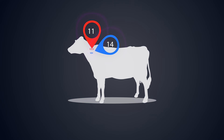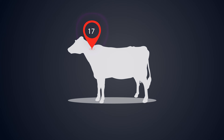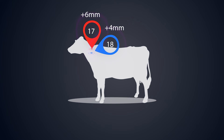Animal number 56 had first-day skin fold measurements of 11 mm at the avian injection site and 14 mm at the bovine injection site. 72 hours later, the skin fold measurement at the avian injection site is 17 mm — an increase of 6 — and 18 mm at the bovine injection site — an increase of 4. Since there are no clinical signs at the bovine injection site and the reaction at the bovine injection site is less than the reaction at the avian injection site, this animal is deemed to have passed the test. However, as there is an increase of more than 2 mm at the bovine injection site, it has not had a negative reaction to bovine tuberculin and has not passed the single intradermal test.